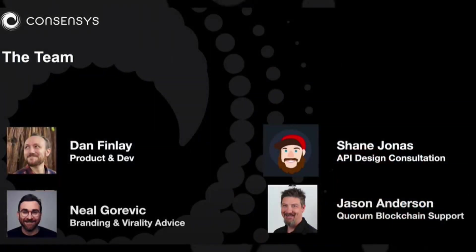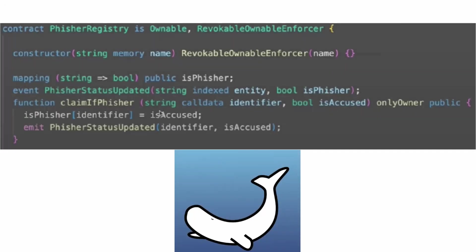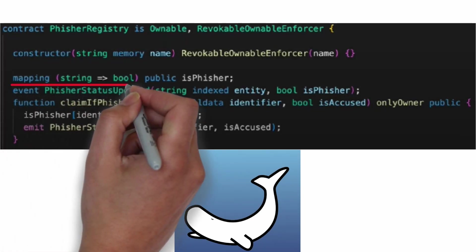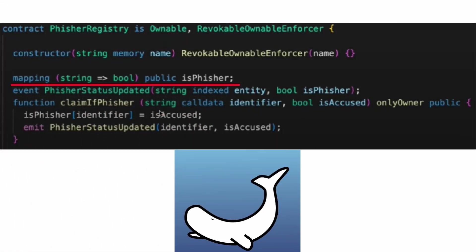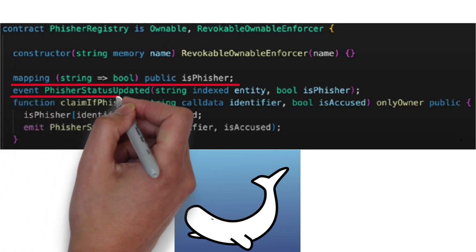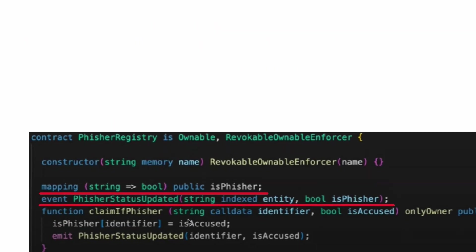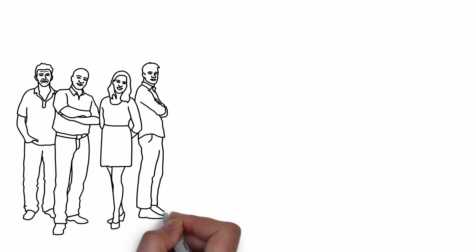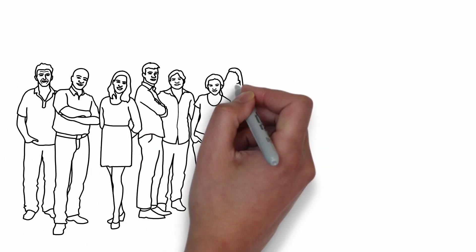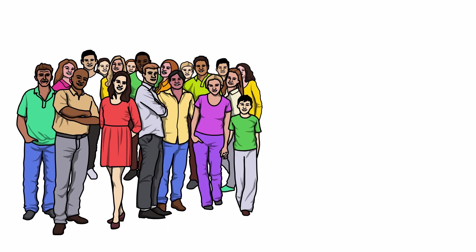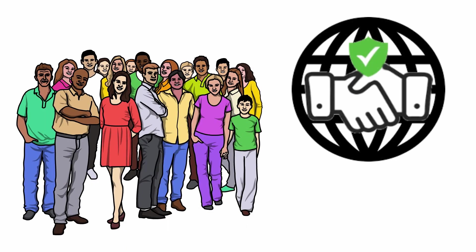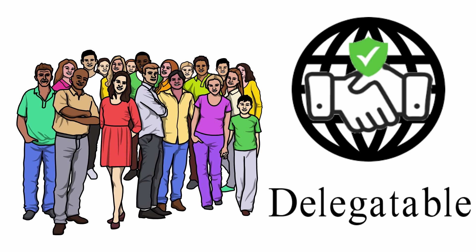Here is the team behind MobiMask. If we look at the body of the MobiMask Solidity contract, we can see it mapping from identifier strings to whether or not we think someone's a phisher. The main function is a claim if someone's a phisher, and only the owner can call it. MobiMask becomes more powerful as more people join to form a web of trust using a new Solidity library made by Dan Finlay called delegatable.